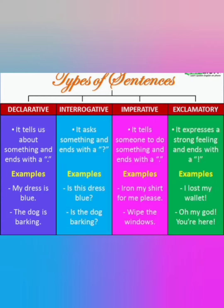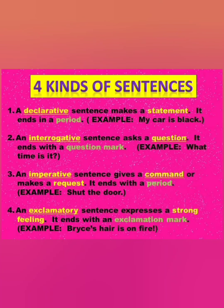An imperative sentence may be a comment, an order, a suggestion, or a request for help. That is called an imperative sentence, and we can identify it with these kinds of words. An exclamatory sentence expresses a strong feeling and ends with an exclamation mark. So these are the four kinds of sentences.